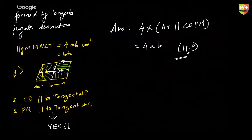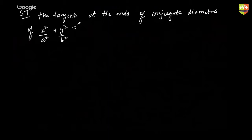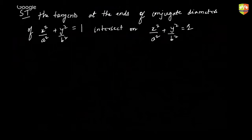Let us try to do some questions based on conjugate diameters. Show that the tangents at the ends of conjugate diameters of the ellipse x²/a² + y²/b² = 1 intersect on another ellipse whose equation is x²/a² + y²/b² = 2. This is quite simple — you should be able to do it within two minutes.